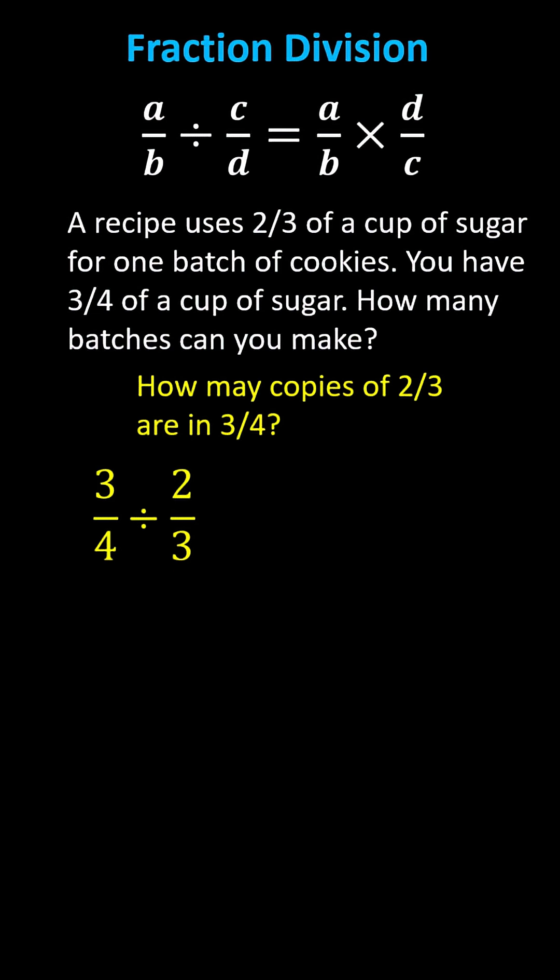Three-fourths divided by two-thirds equals three-fourths times three-halves. It's not possible to simplify before multiplying because the only common factor between the numerators and denominators is one. So we multiply the numerators and denominators, giving us a product of nine-eighths.